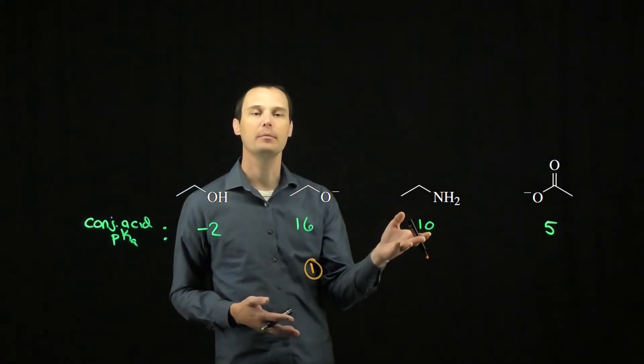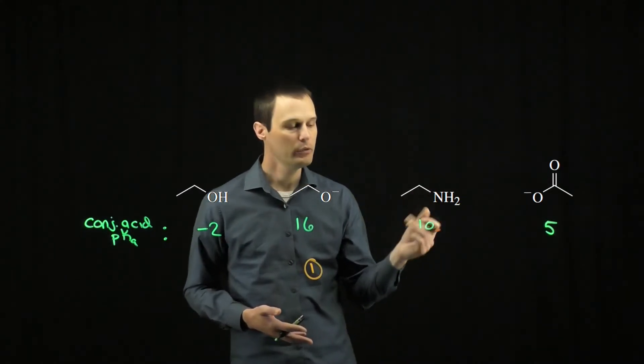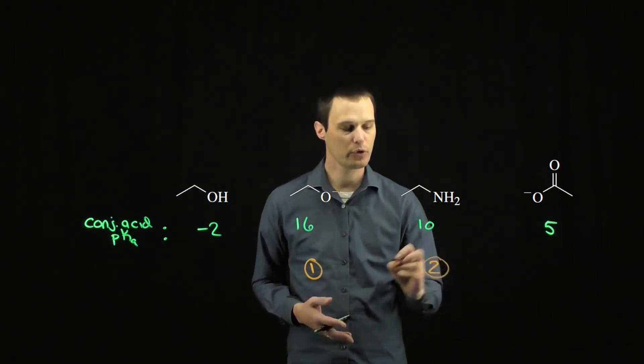The next weakest acid would be the ammonium salt, which means the next strongest base is the amine, which means the amine will be the number two strongest base in this list.